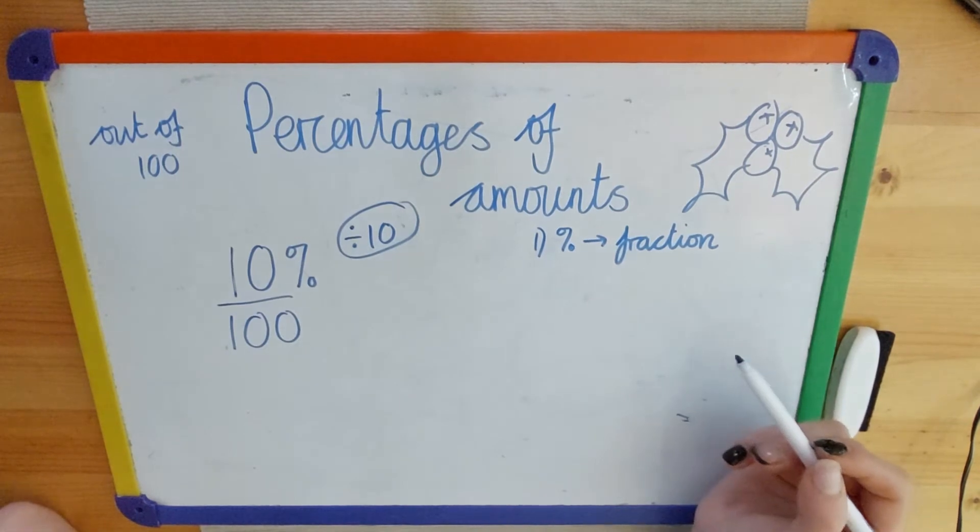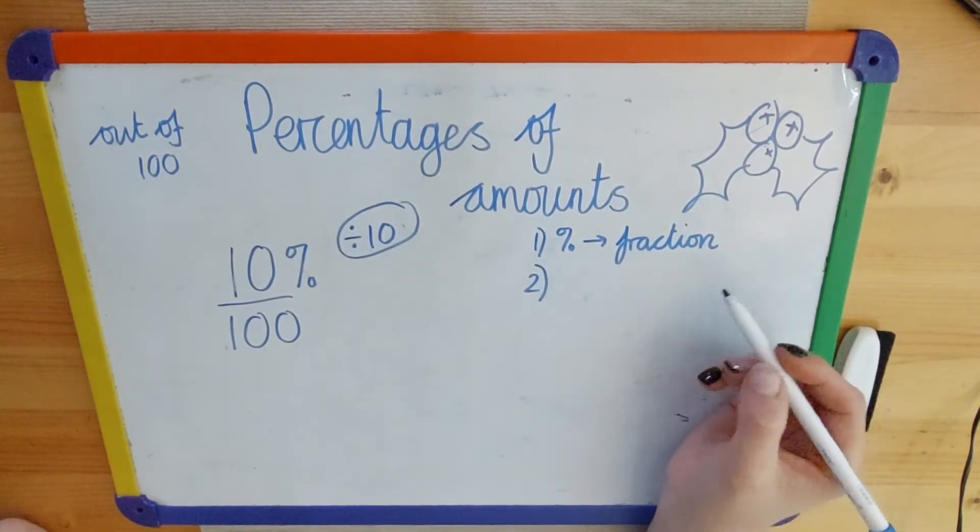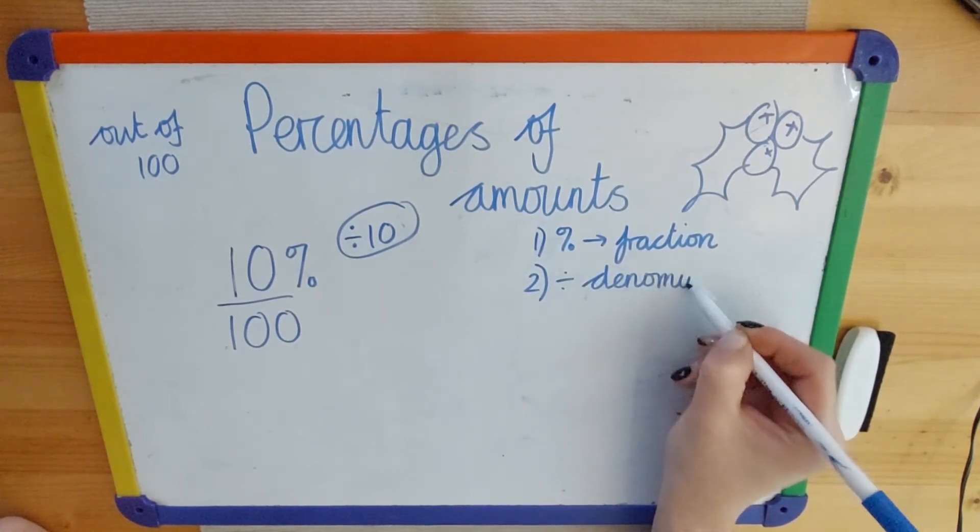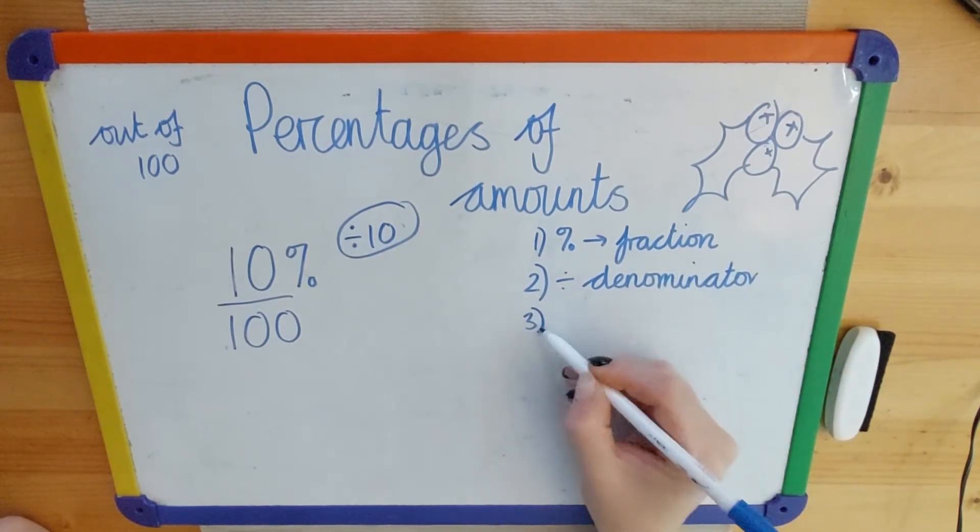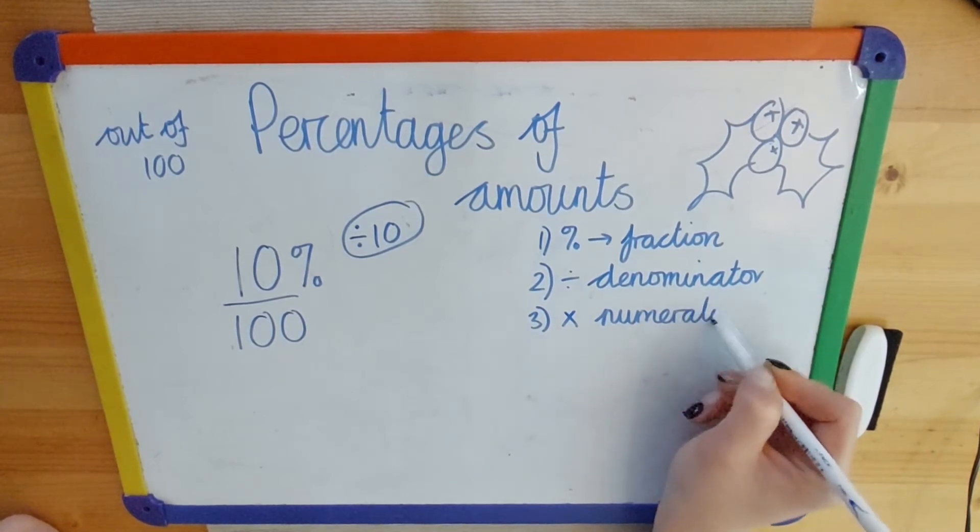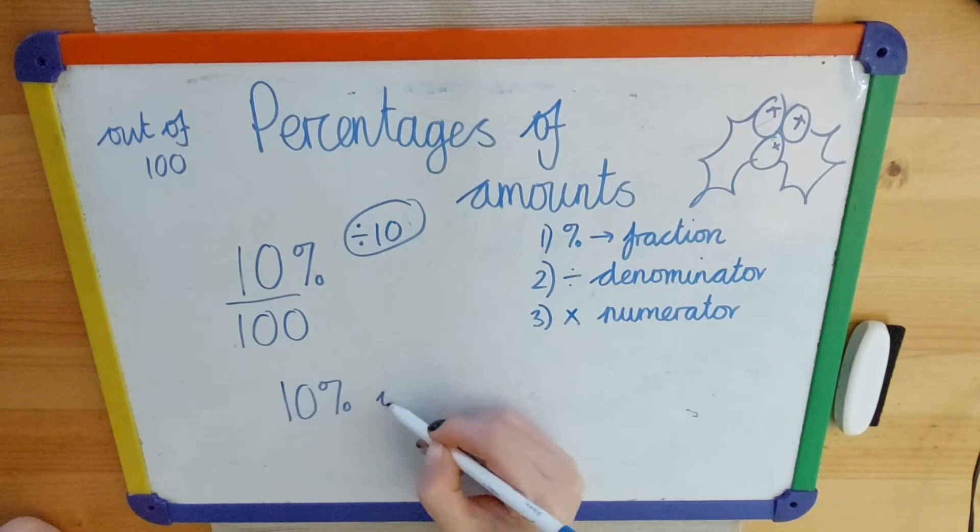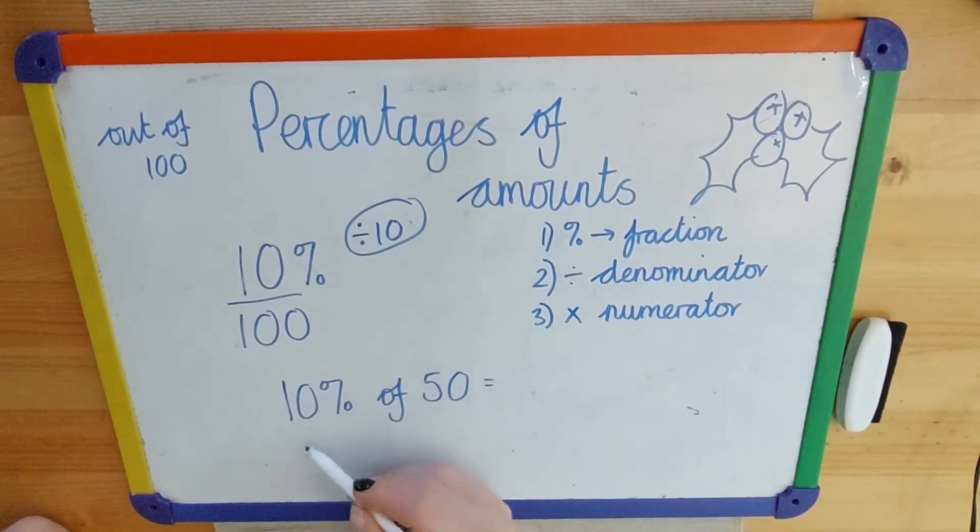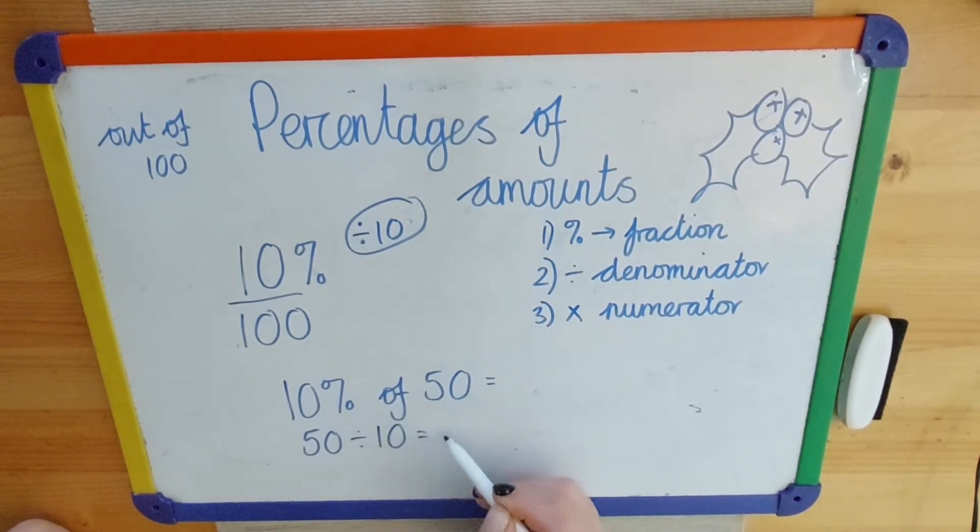And we know that we just divide by 10 to find what 10% is. The second step is we need to find the fraction of the amount, so we divide the number by the denominator, as we looked at in the previous video, and then we take that answer and we multiply by the numerator. So, for example, if I wanted to find 10% of 50, all I would need to do is 50 divided by 10, which we know gives us 5.